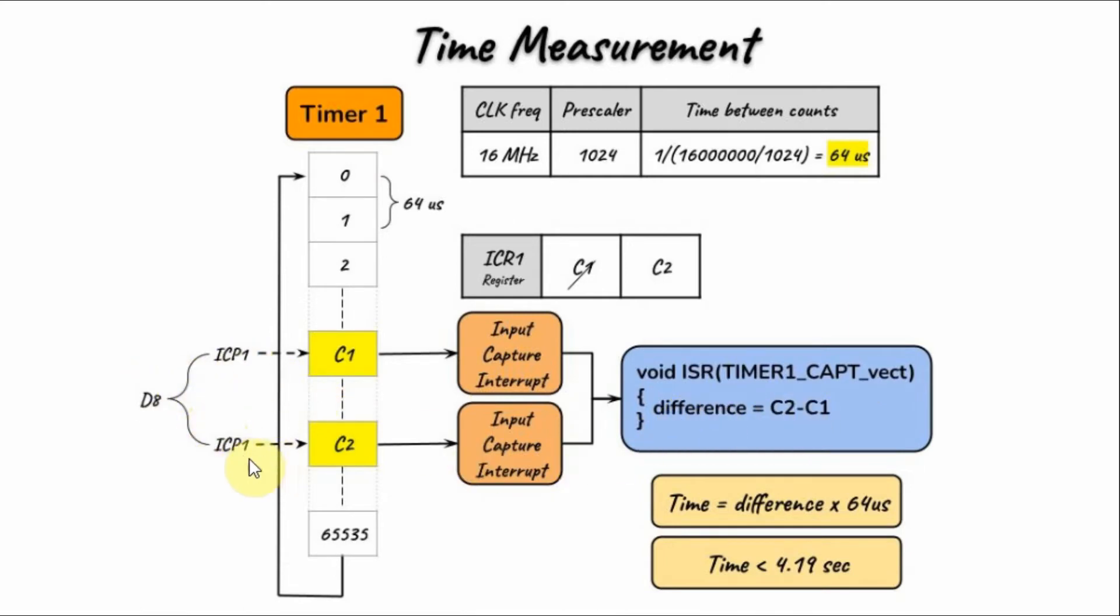When the second pulse arrives, this count value is stored in the input capture register of Timer 1. Input capture interrupt occurs and the ISR is called and we then calculate the difference between the first capture and the second capture. Now if we take the difference and multiply it by 64 microseconds, this will give us the time between the two pulses.